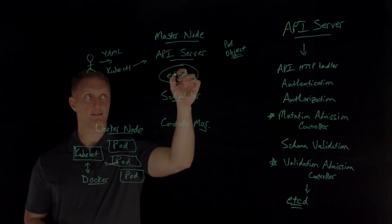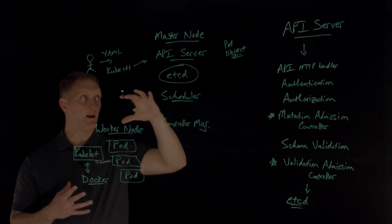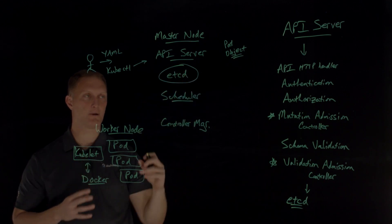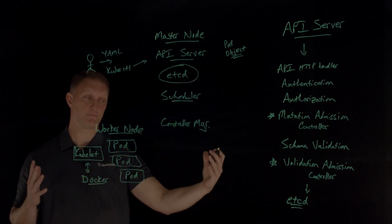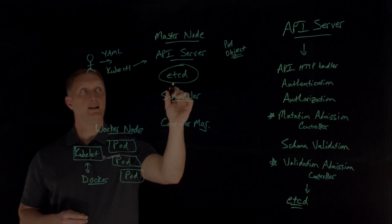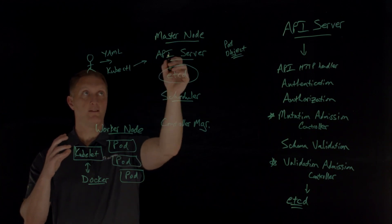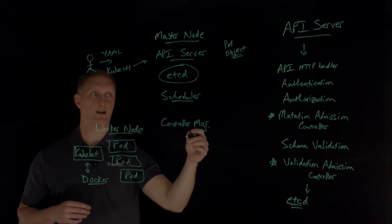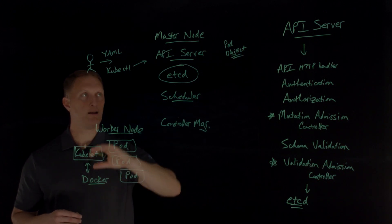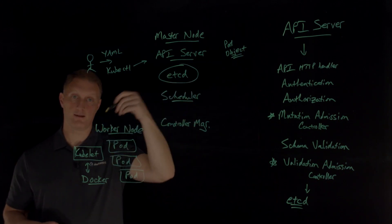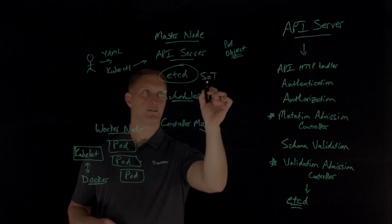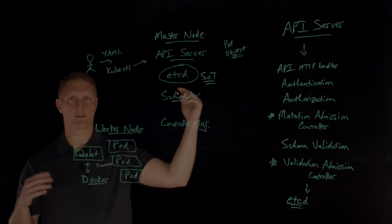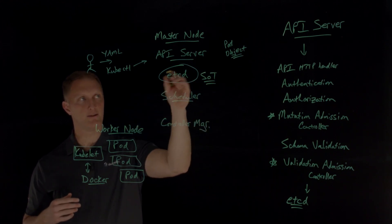The kubelet then updates the API server again saying the pod has been created, and the API server updates etcd again. Now etcd has all the information: a new request came in via the YAML file, a pod object was created by the API server, a node was established via the scheduler, and Docker created the new pod. That's why etcd is the source of truth for the entire cluster — you can recreate the entire Kubernetes cluster if it were to fail based on the information held within etcd.